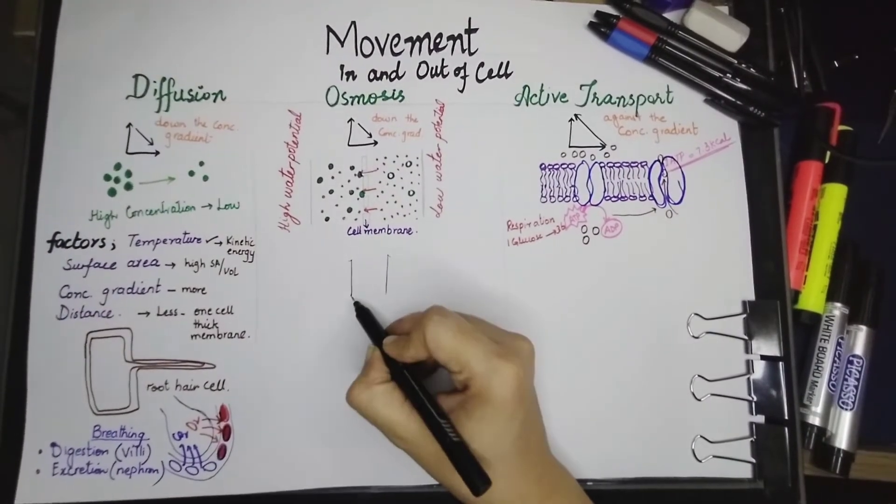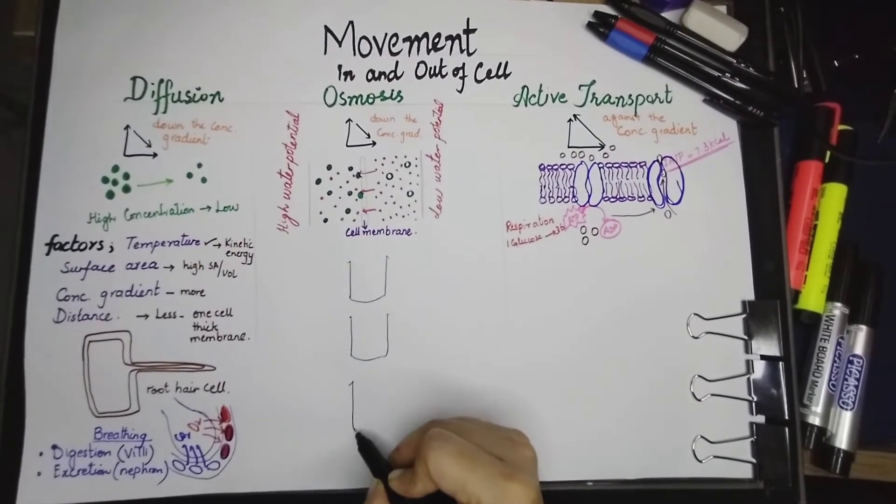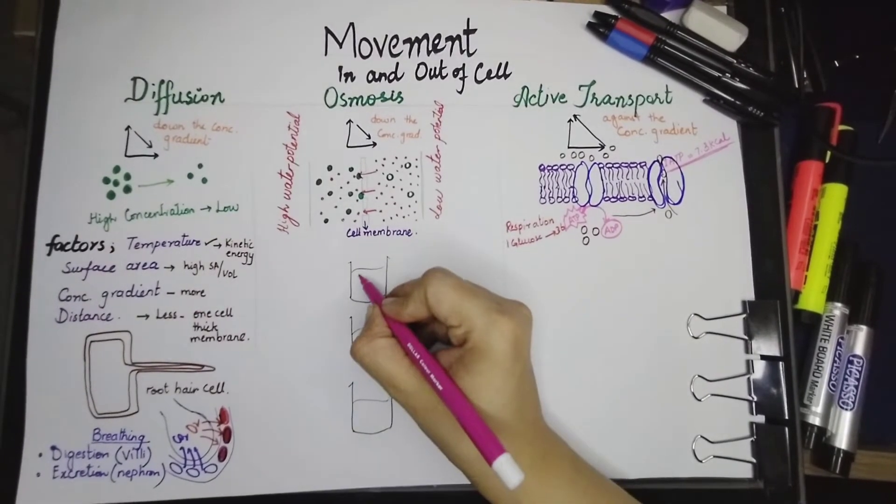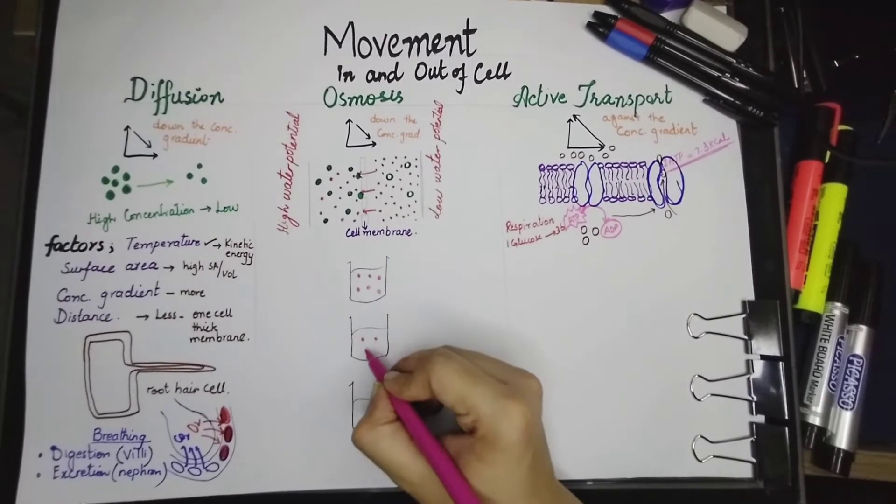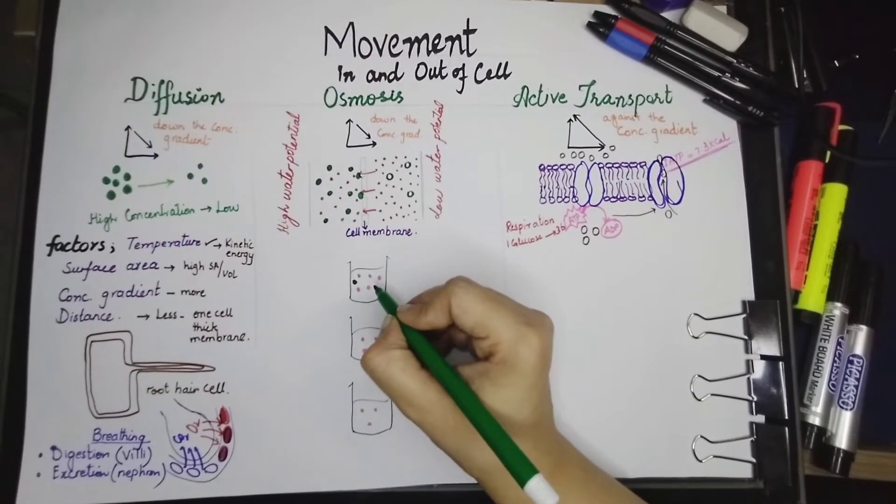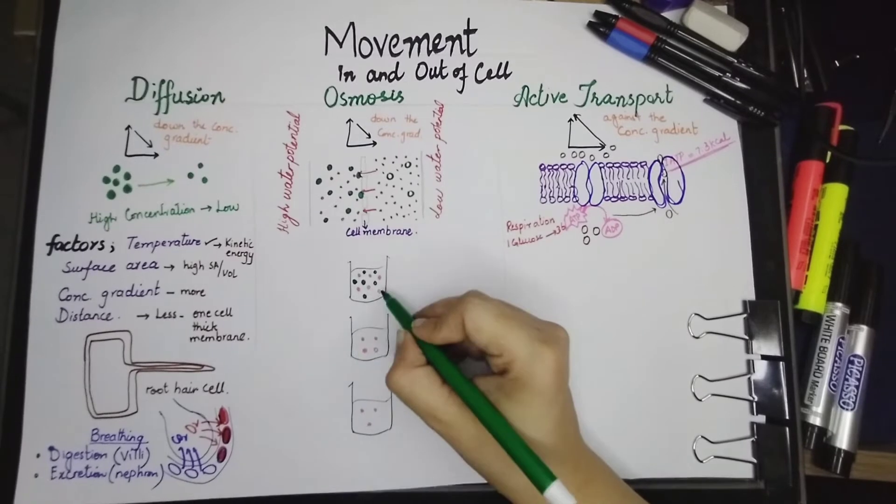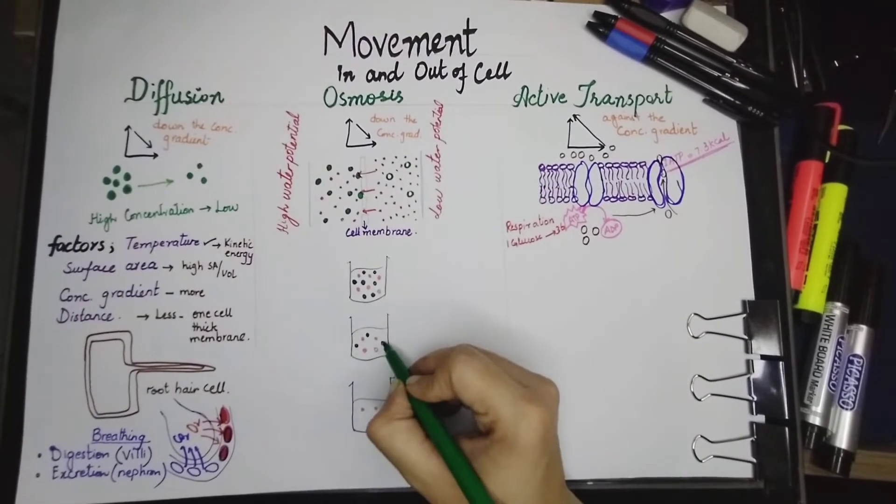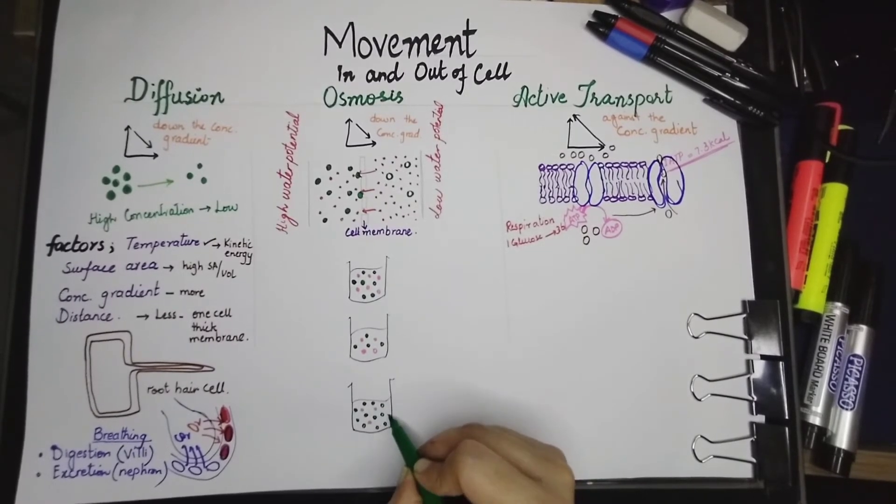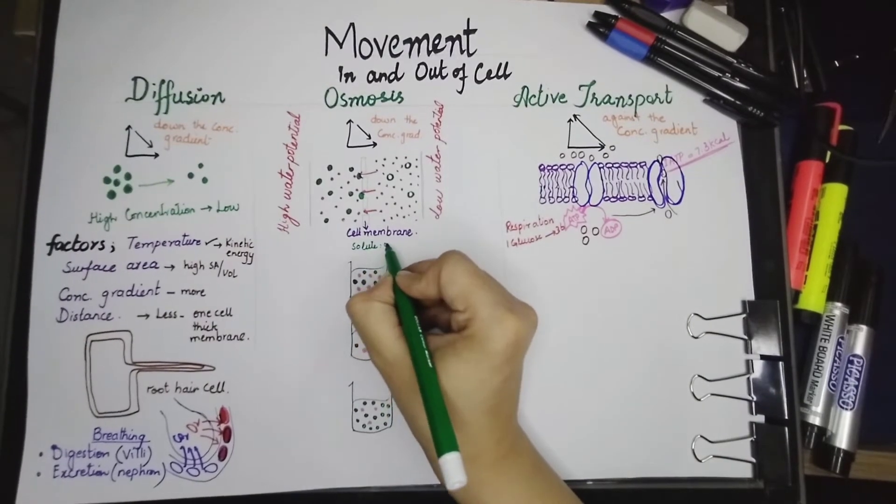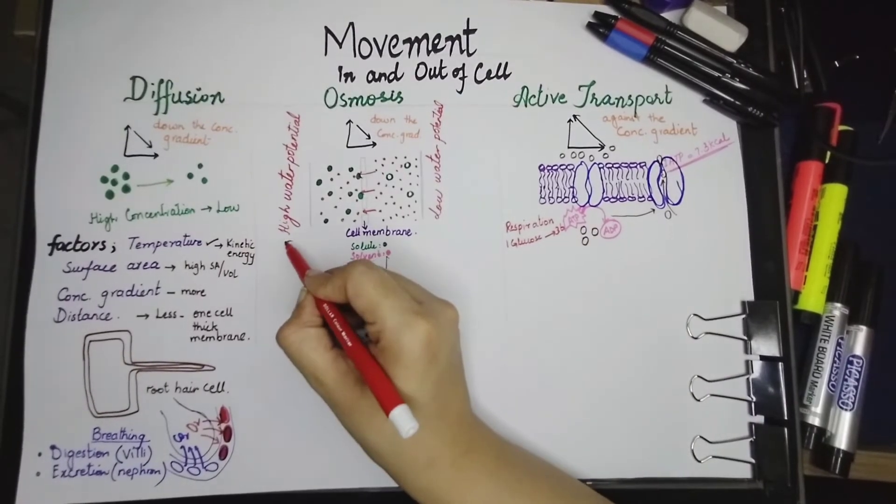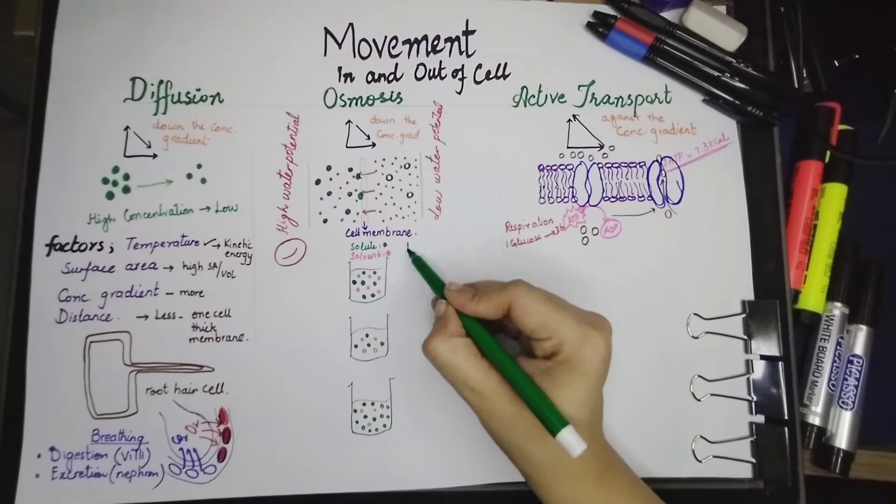Let's understand the concept of osmosis with the help of some living cells. We are going to talk about two types of cells, one from the plant and one from the animal cell. We are going to take three beakers. In first beaker, we have added solute molecules and in the second, we have added same amount of solute and same amount of solvent molecules. And in the last beaker, we have added more amount of solute molecules and there are going to be less amount of solvent molecules. So first beaker, we have the solute molecules in less quantity and in the last beaker, solute molecules are more. Now let's try to put these cells in it.